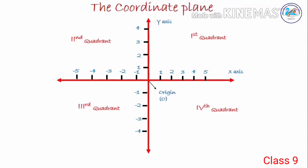Then, we have to learn the sign convention of each quadrant. If you consider a point on this plane, the signs of that particular ordered pair — the x-value and y-value signs. In the first quadrant, the x-axis values are positive and the y-axis values are also positive. So, the first quadrant point will always be positive, positive — x-value positive and y-value also positive. In the second quadrant, the x-values are negative and the y-values are positive. The sign convention is minus, plus. Always the first value is x-value and the second value is y-value.